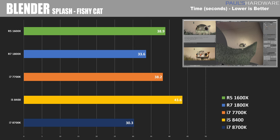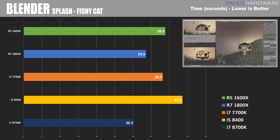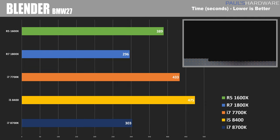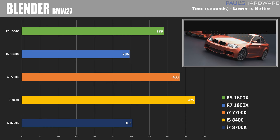Moving on to Blender, a very popular 3D modeling and rendering software. This is time in seconds so a lower score is better, and the 8700K wins yet again, beating out the 1800X by about 3 seconds. Switching over to the Blender BMW 27 test, which takes a bit longer, the 1800X actually takes the lead with only 296 seconds versus the 8700K's 303 seconds. Worth pointing out that the 1600X, comparable in price to the i5-8400, benefits from its thread advantage with all 12 threads versus the 8400's only 6, taking a pretty significant lead here.